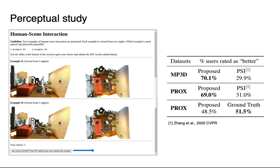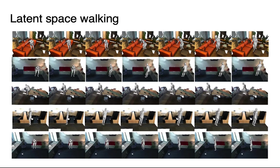In the perceptual study, we show results of two methods at the same time, and users pick the result they think is more natural. Our method outperforms the baseline by a large margin. When compared with the ground truth of PROX, our method is regarded as more realistic by nearly half of the users, indicating that our results are hardly distinguishable from the ground truth. By interpolating between latent vectors of the VAE, the generated results transform smoothly between two poses while preserving natural interactions with the environment.